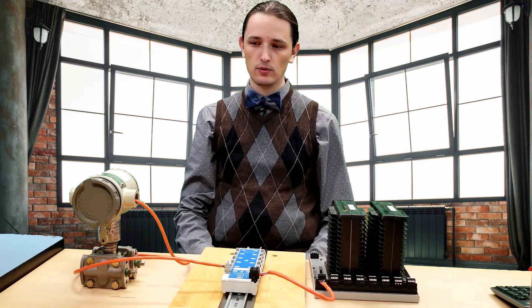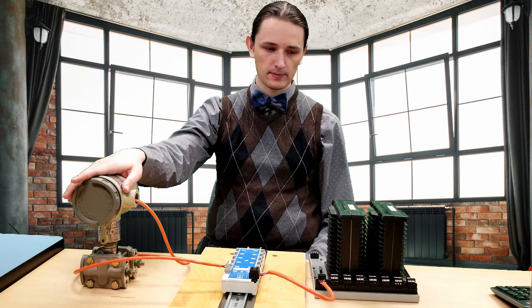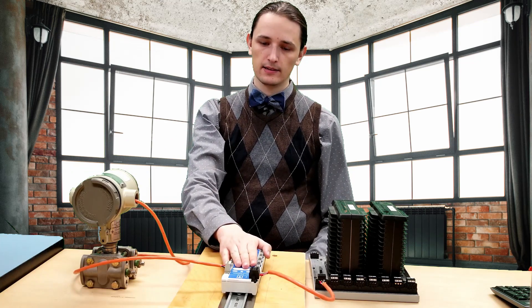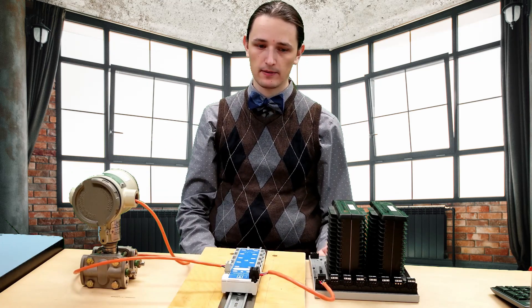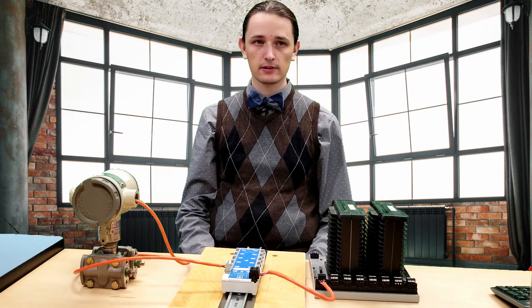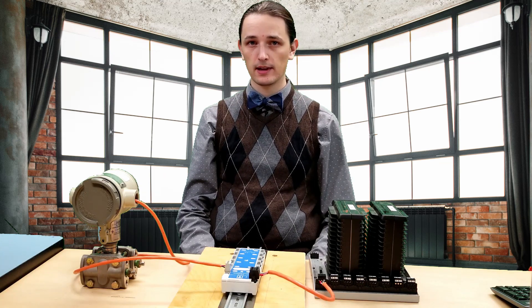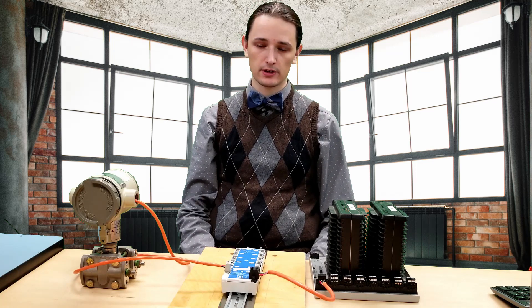It's important not to ground at two points, for example at the instrument or at the device coupler in addition to the power supply, because the differences in ground potential throughout the plant could lead to current flowing through the shield, introducing noise in the segment, defeating the purpose of the shield.